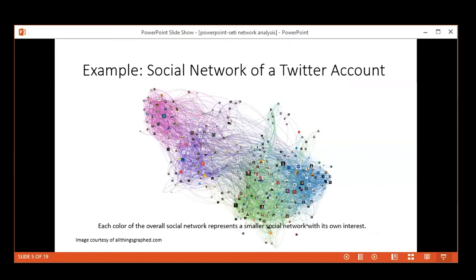I'll go quickly through a few examples. Here's an example of a social network of a Twitter account. You can see this overall network with all those nodes—pictures from Twitter accounts—and the different colors in the network represent sub-networks organized by a common interest.